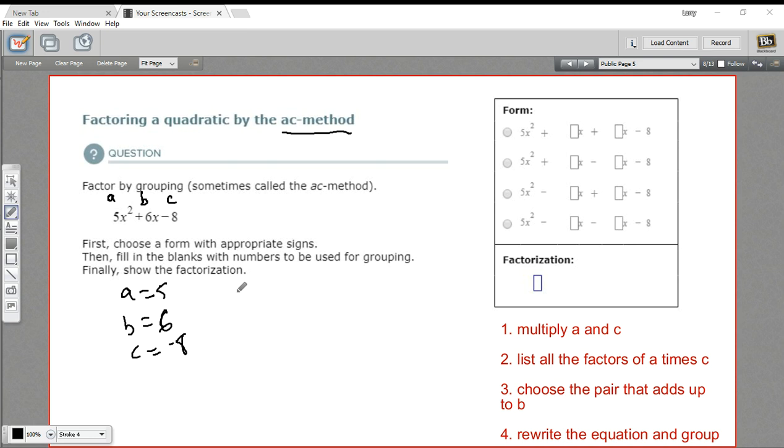So A times C is 5 times negative 8, and that is negative 40. So that's the first step, just multiply A times C.